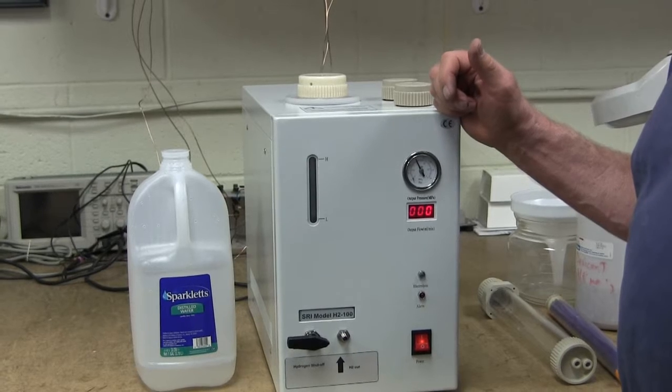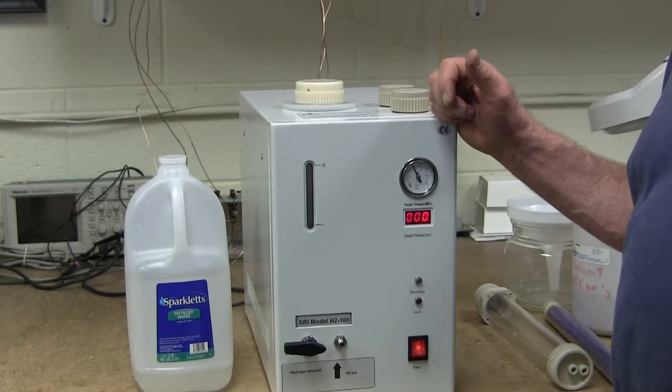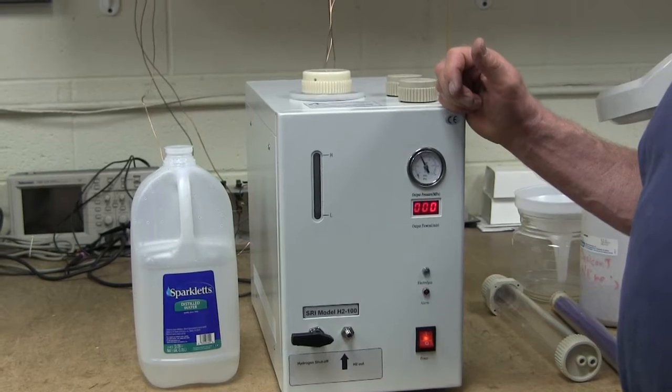This makes up to 150 milliliters per minute of hydrogen using a proton exchange membrane cell.